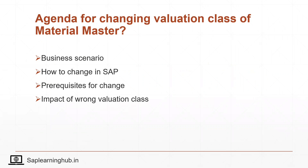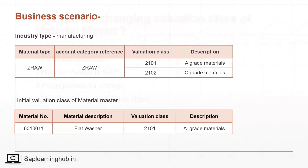Let's see the business scenario first. Consider there is one manufacturing industry procuring raw materials. For raw materials they are using material type Z-RAW, and in this raw material type there are two valuation classes: one for A-grade materials (2101) and one for C-grade materials (2102). A-grade materials means high value and less quantity; C-grade materials means less value and high quantity.